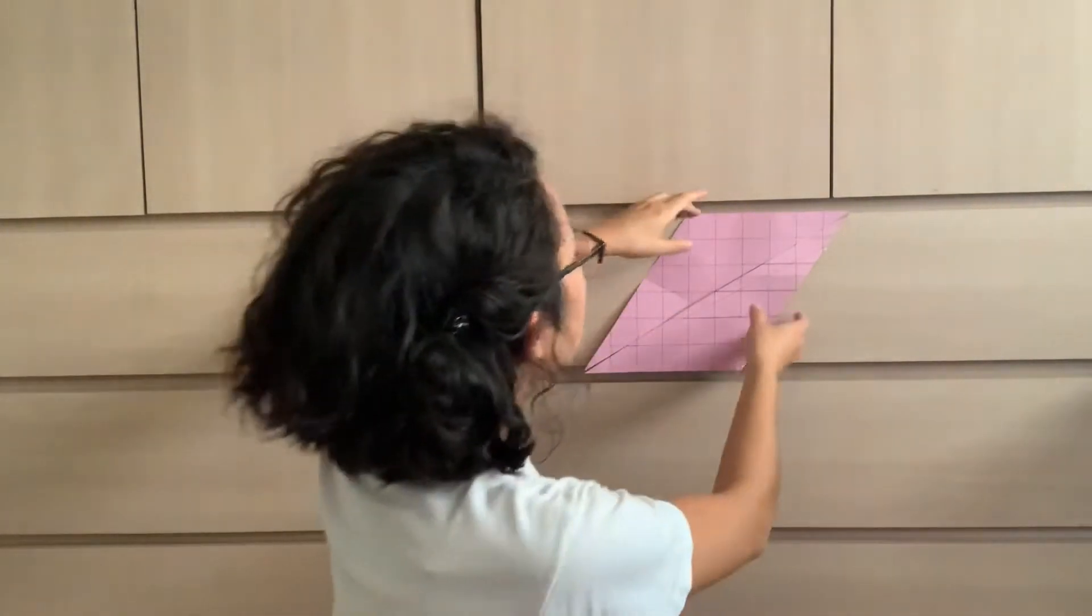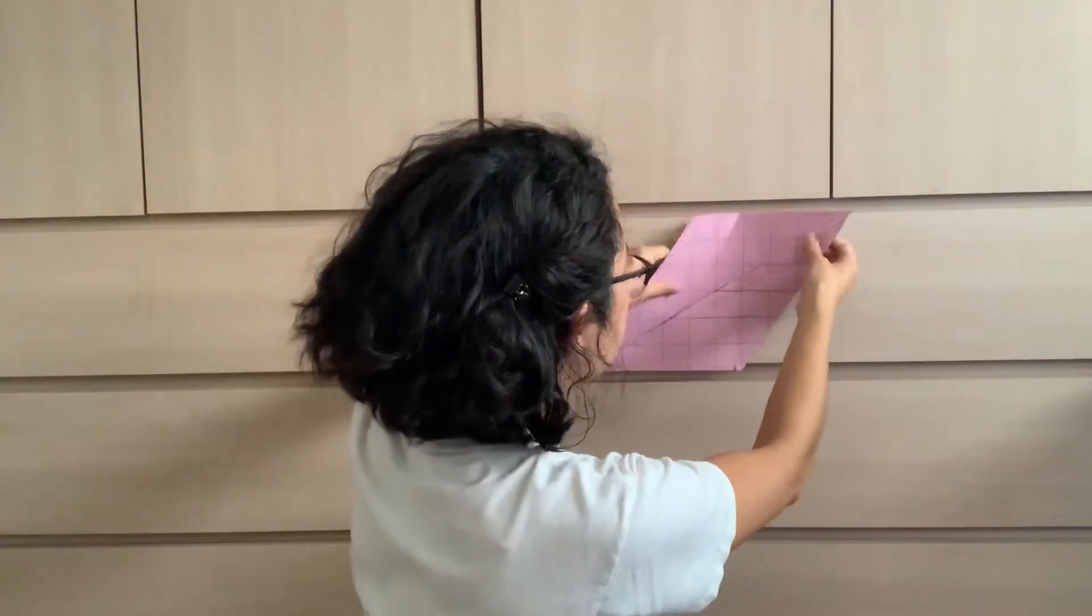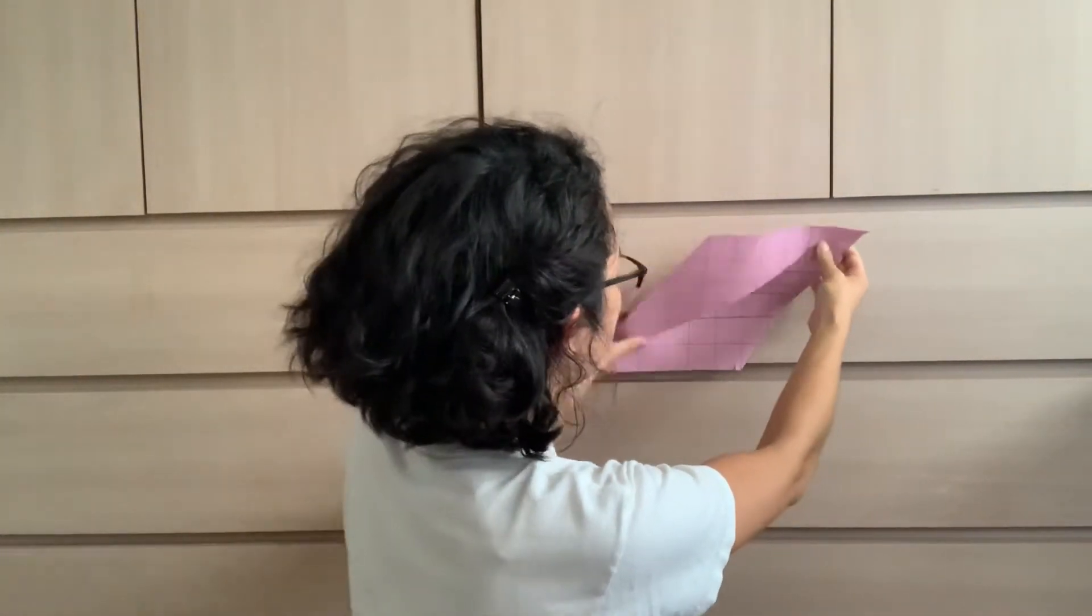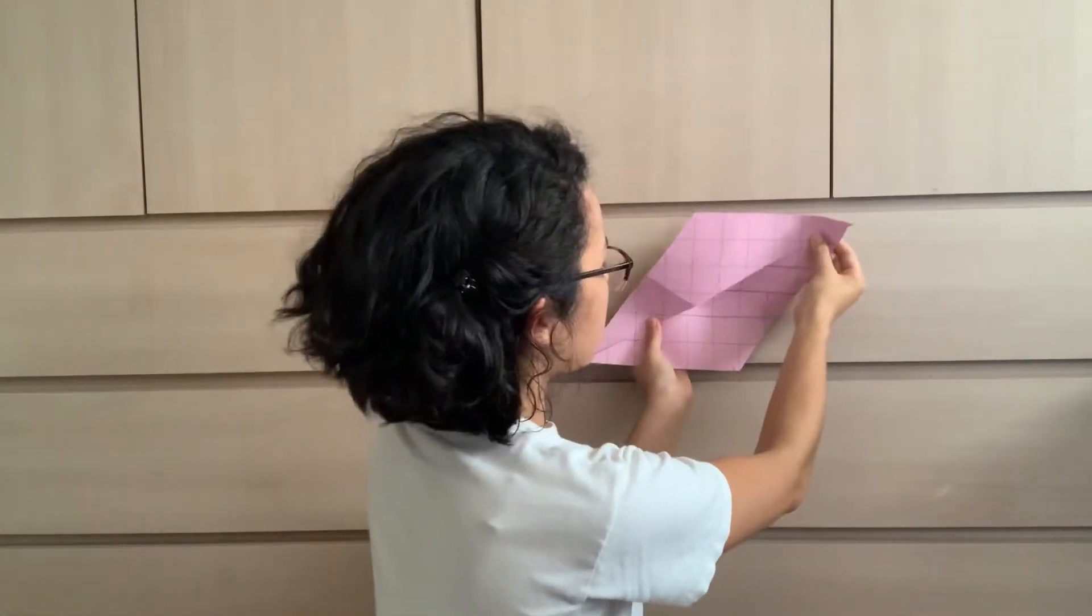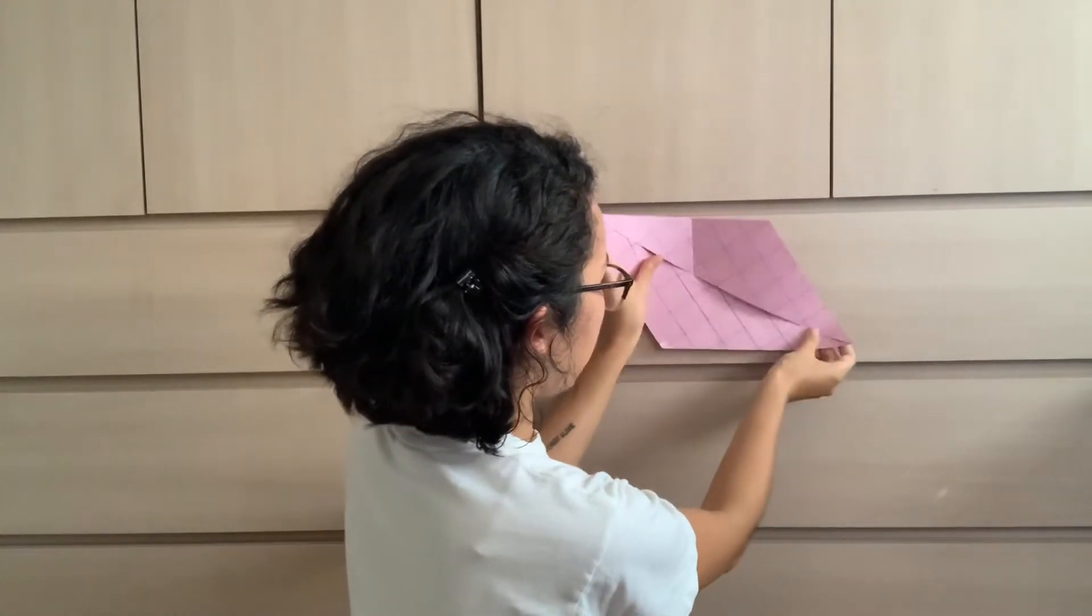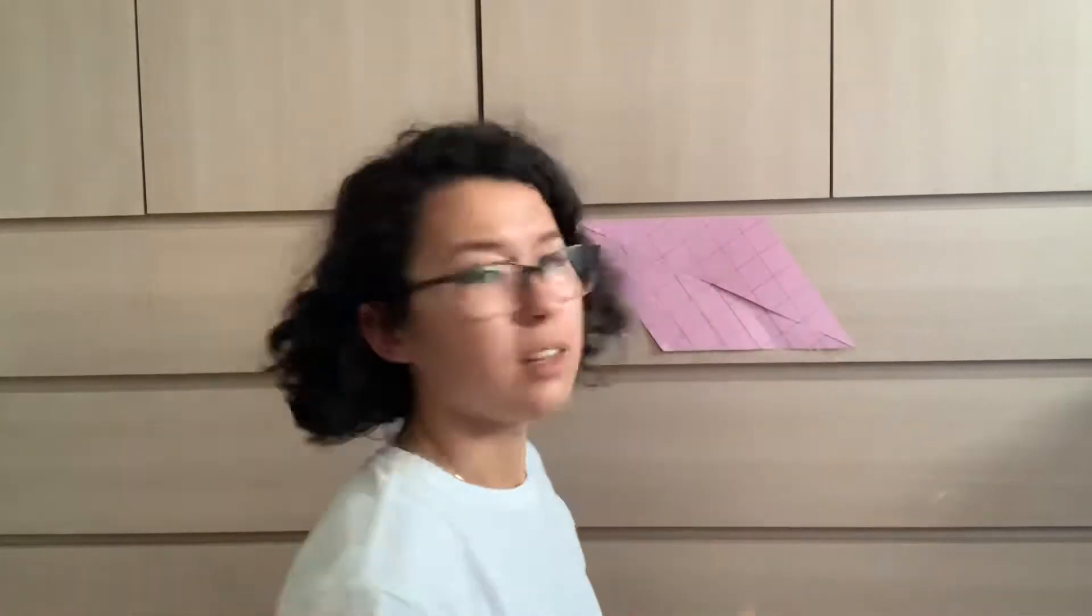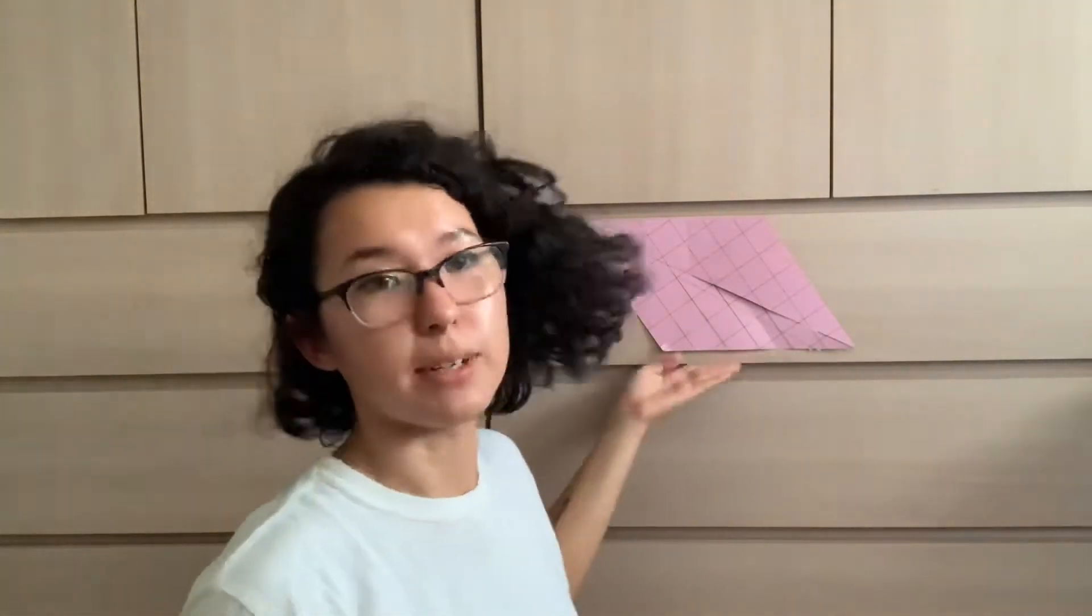But think about this: what if I turn the shape? It's still the same shape; I'm just repositioning it. What if I took this shape and turned it like that? Now which side is the base? Well, this one, you might say, because it's the bottom now, right?